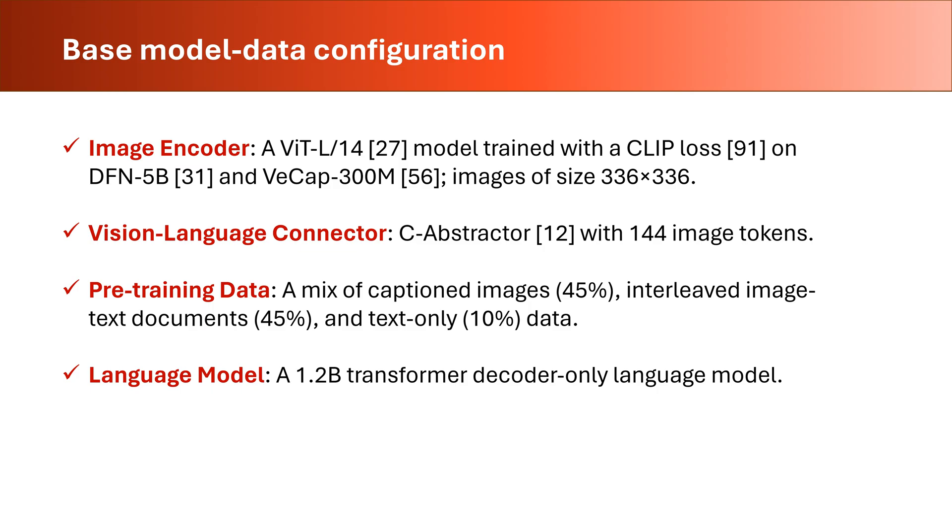Four, we scale up this model to multi-billion parameters so that it can be used for realistic tasks. The base model data configuration has four major components. These include image encoder, vision-language connector, pre-training data, and language model. These components are selected from the best available work.